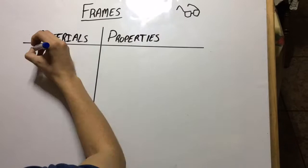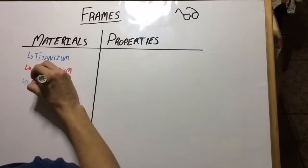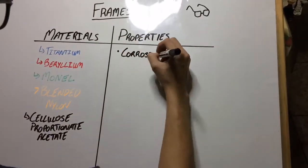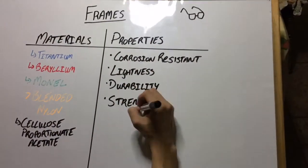Frames are made out of a number of different materials. These are titanium, beryllium, monel, blended nylon, and cellulose acetate.